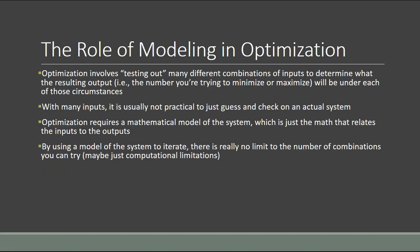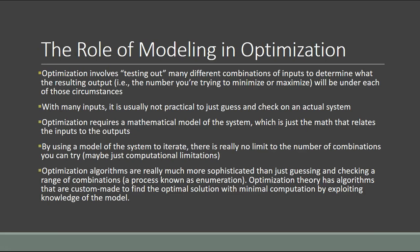Optimization theory is much more sophisticated than just guessing and checking. Trying all possible combinations is known as enumeration. When a system has hundreds or thousands of different inputs, the number of possible combinations becomes enormous and could require a tremendous amount of computational power. Optimization theory has algorithms custom-made to find the optimal solution without having to try every single possible combination — without having to completely enumerate the system.